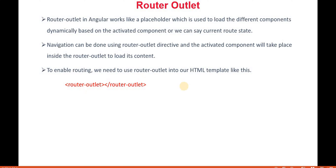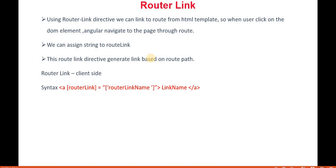The next thing is router link. Angular is basically a component-based architecture. To communicate between components or to go from one component to another, we use the router. We navigate using the keyword called router link. For example, if I want to click on a particular link and go to another component, the router link contains that link name — which is the name of that particular route path.